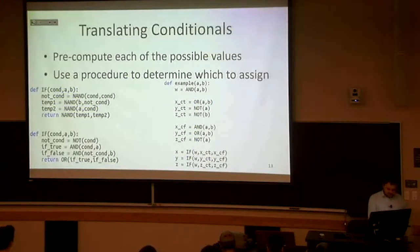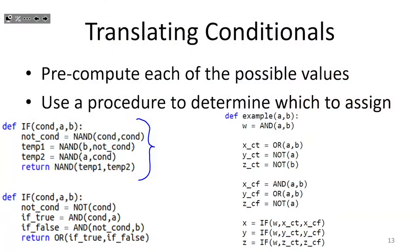The way this is going to work is we're essentially going to have this if procedure. It's going to take three bits as its arguments: we're going to have the condition of the if — the bit we're using to choose what result we want — and then if the condition was true, we want to return a, and if the condition was false, we want to return b.